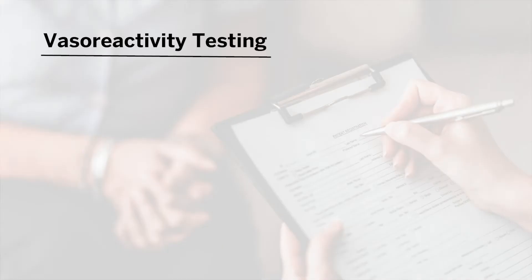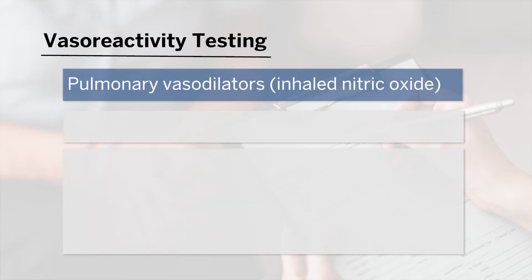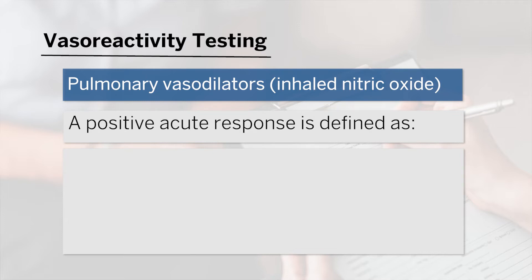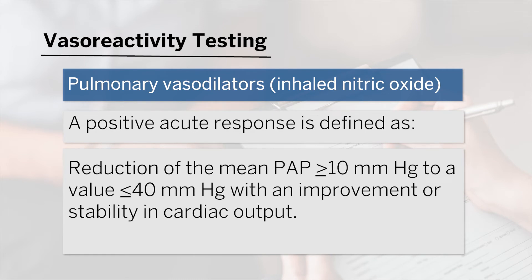When we think about pulmonary arterial hypertension, we would confirm this diagnosis with a right heart catheterization. At the time of right heart catheterization, we would also perform vasoreactivity testing, which is typically performed by giving the patient a pulmonary vasodilator — for example, inhaled nitric oxide — and monitoring their hemodynamics. Someone who has a positive vasoreactivity test would have evidence of reduction in their mean pulmonary artery pressure by greater than 10 to a value less than 40 millimeters of mercury, with an improvement or stability in their cardiac output.